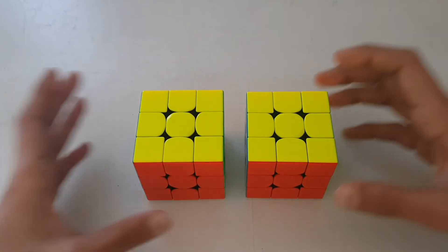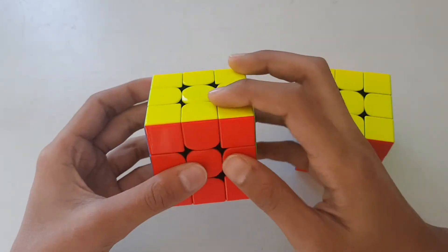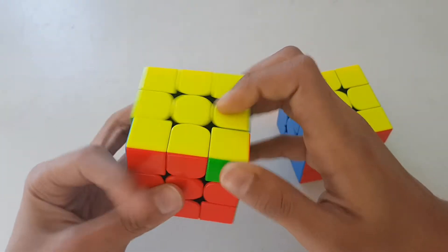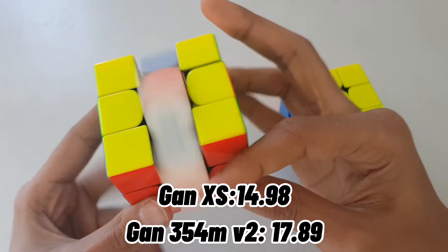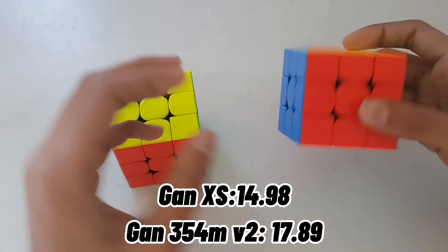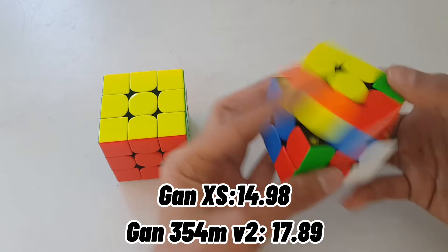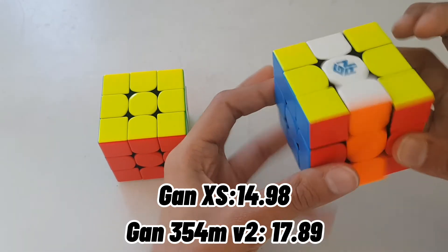So now let's talk about the results. The GAN Axis I got an average of three of 14.98, while on the GAN 354 Version 2 I got an average of three of 17.89.